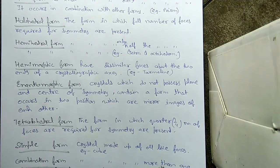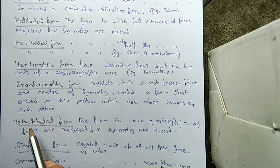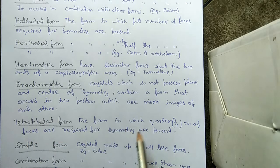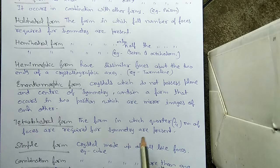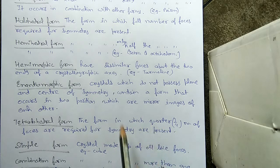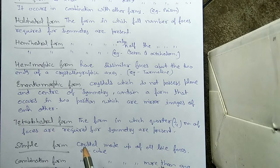The next one is the tetrahedral form. The tetrahedral form is the form in which a quarter — one-fourth — of the number of faces required for symmetry are present.